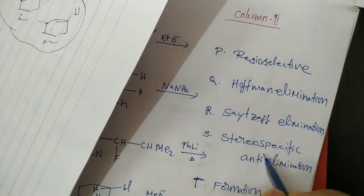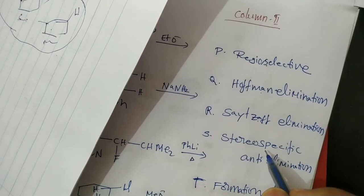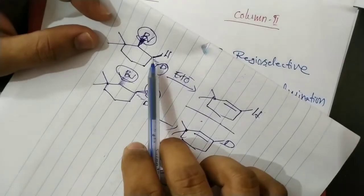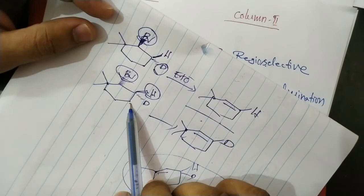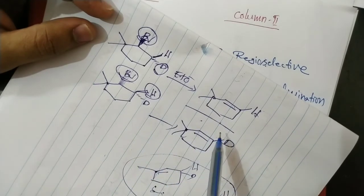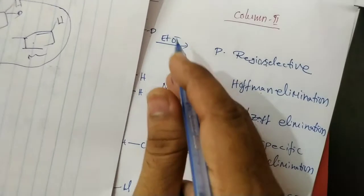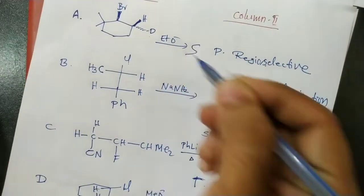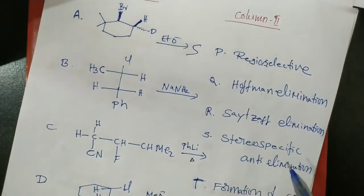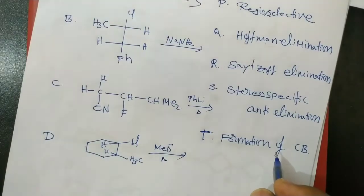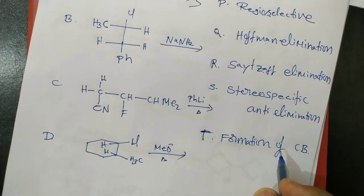So it is stereospecific and an anti-elimination reaction. This stereoisomer produces one product; another stereoisomer produces a different product. It is a stereospecific anti-elimination reaction. Formation of the conjugate base is not involved because it is an E2 elimination — a single step process.